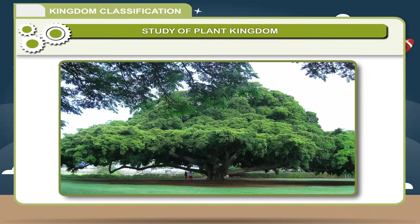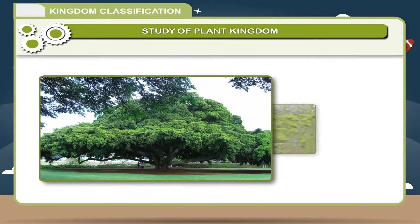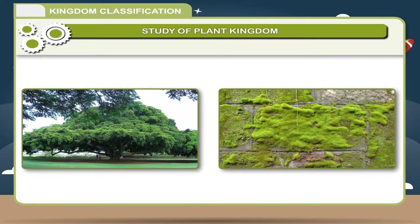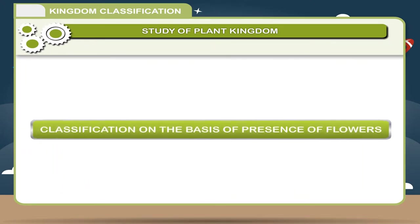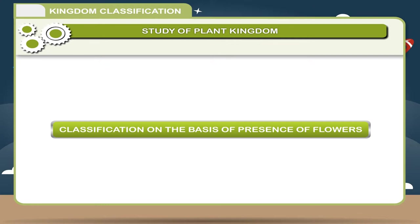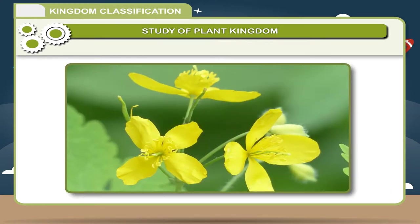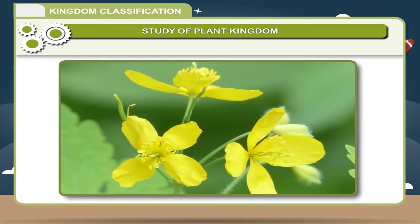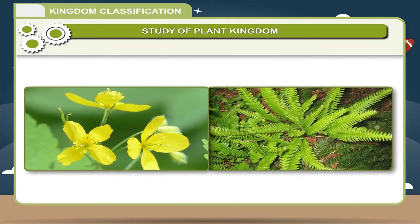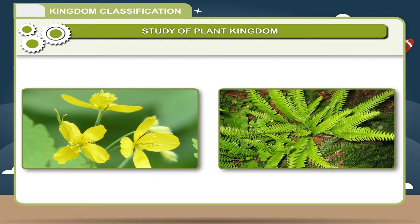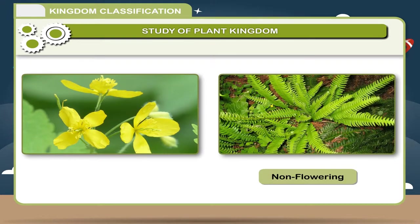If you observe plants carefully, you will find some do not bear flowers and others bear flowers. The classification of plants is based on the presence or absence of flowers. They are grouped into non-flowering and flowering plants.